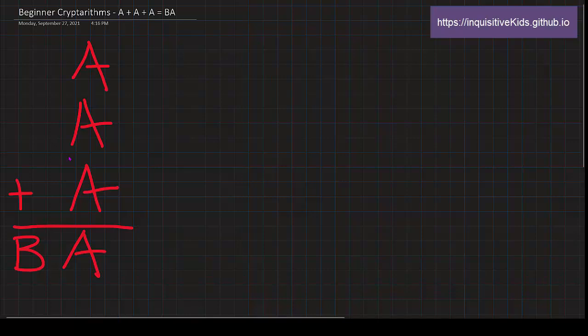Since there's only two letters here, let me quickly write A and then B. Behind these columns, we're going to write all the possible digits they could have and then eliminate them.